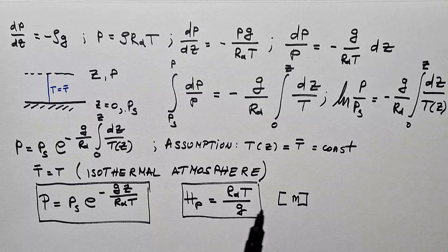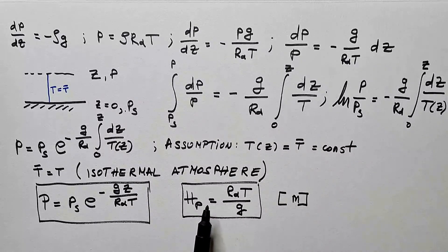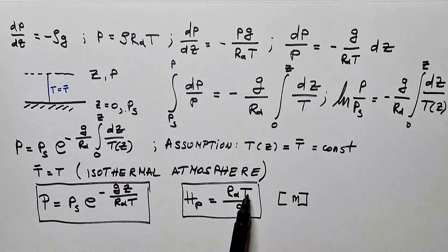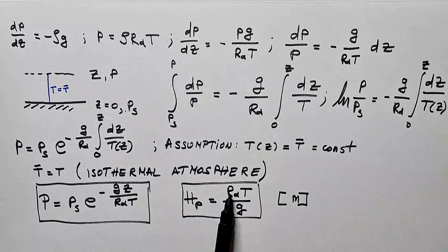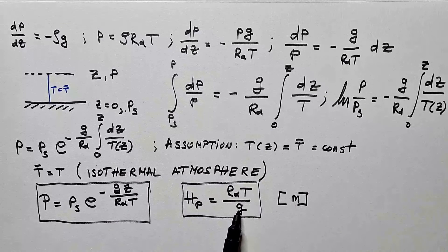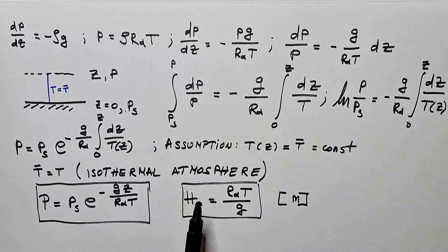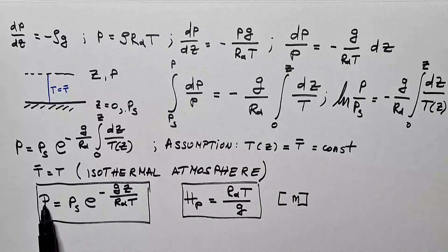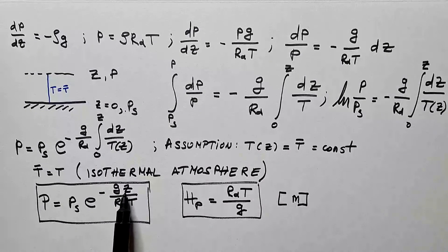Now, let's analyze this expression a little bit. If we say that hp is large, that means that T has to be large, because Rd and g are fixed constants. But that also means if hp is large, then pressure decreases slowly with the height.